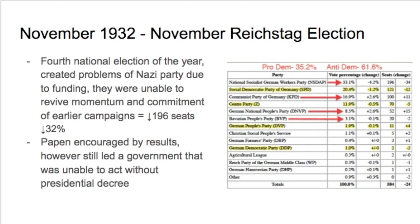A fourth national election was held — if you were in Germany in 1932, you had to go to the polls a lot. It created problems for the Nazi Party due to funding — with so many elections in the same year, they were unable to keep funding going, and actually lost seats, going down to 196 seats and only 32%. Papen was encouraged by the results, however the government still had to act through presidential decree using Article 48.